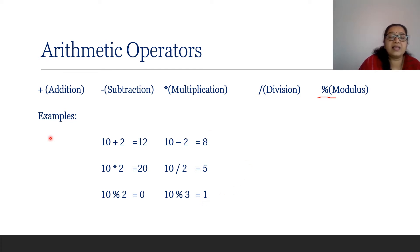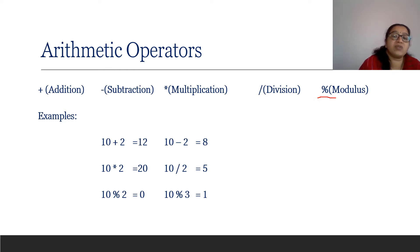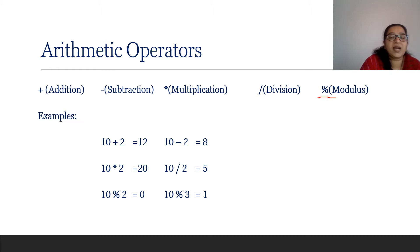So these are the arithmetical operators used in C++. Plus for addition, minus for subtraction, asterisk for multiplication, slash for division, and the percentage sign for the modulus operator. The modulus operator is the one additional operator unique to C++.